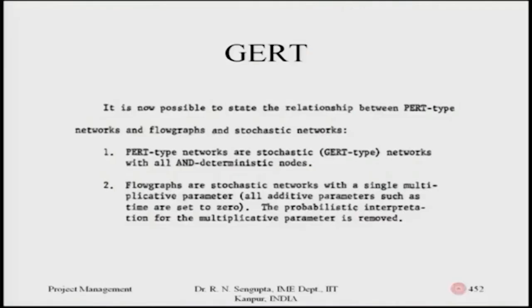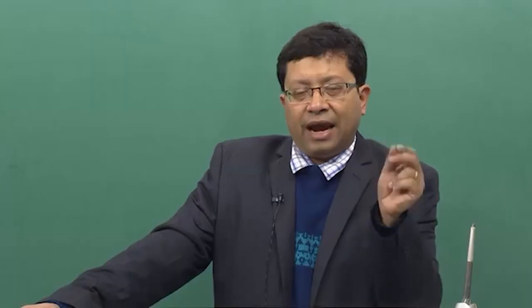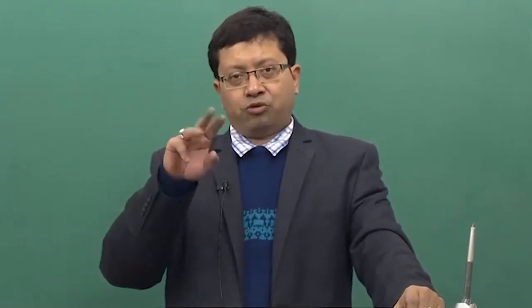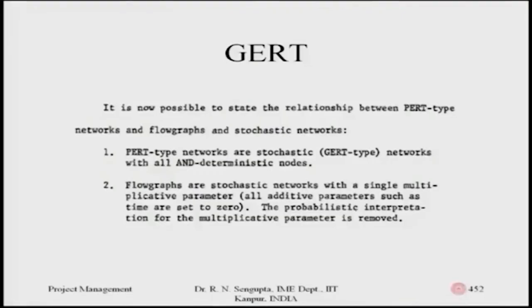It is now possible to state the relationship between PERT type networks and flow graphs and stochastic networks. PERT type networks are stochastic — that is GERT variety — networks with all AND deterministic nodes, combining the AND and deterministic combination from the three-input two-output combinations. Flow graphs are stochastic networks with a single multiplicative parameter where all additive parameters such as times are set to zero, and the probabilistic interpretation of the multiplicative parameter is removed.